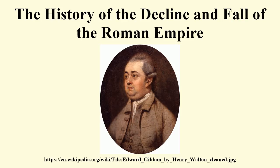Gibbon's initial plan was to write a history of the decline and fall of the city of Rome, and only later expanded his scope to the whole Roman Empire. Although he published other books, Gibbon devoted much of his life to this one work. His autobiography, Memoirs of My Life and Writings, is devoted largely to his reflections on how the book virtually became his life. He compared the publication of each succeeding volume to a newborn child. Gibbon continued to revise and change his work even after publication.